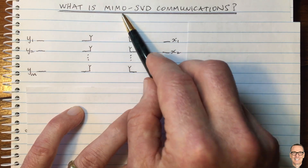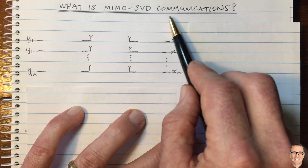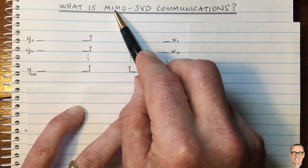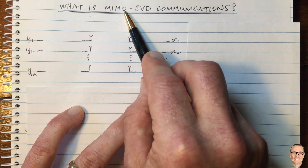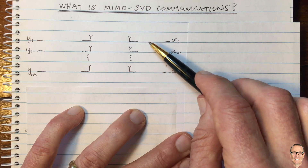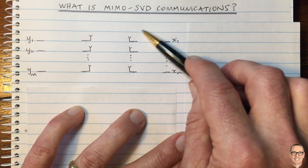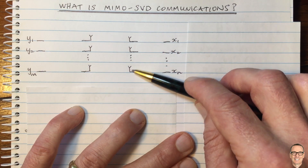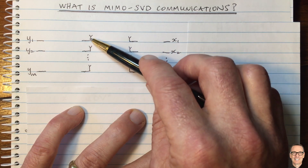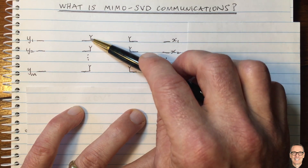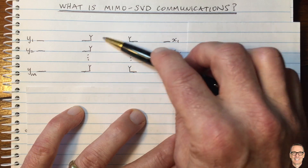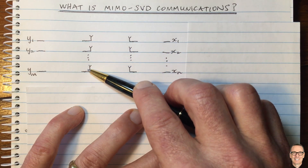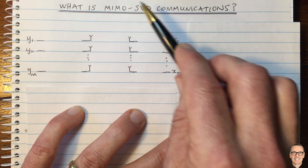What is MIMO SVD communications? The multiple input, multiple output part corresponds to a transmitter having multiple antenna elements and the receiver, which is the output of the channel, having multiple antenna elements as well. So that's the MIMO.